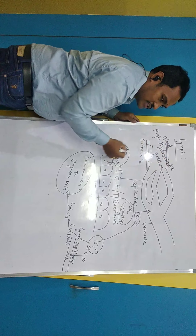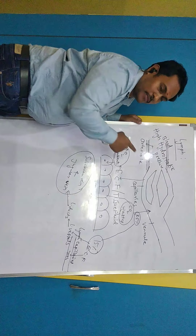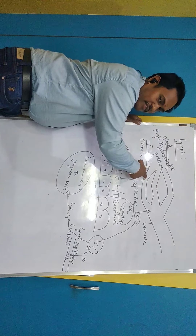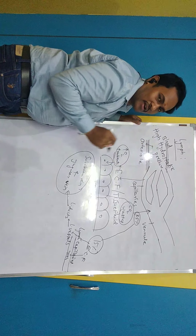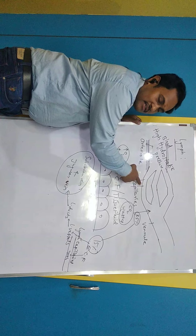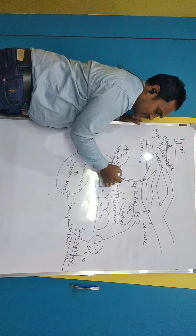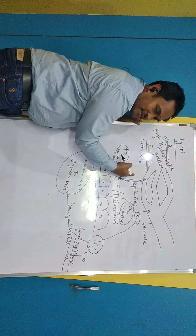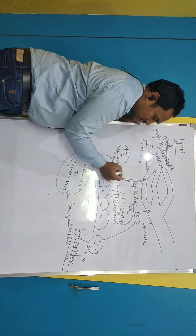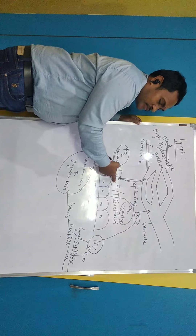Blood vessel walls have three layers: tunica externa, tunica media, and tunica interna. But near the capillaries, there is only one layer, which is the endothelium. Because this layer is very thin, blood comes out. The blood which comes out of the blood vessel is named as ECF — extracellular fluid, or tissue fluid.